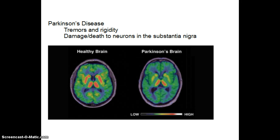That's what we see in this scan. In a healthy brain, the red and yellow lights up in areas of the basal ganglia and the substantia nigra, whereas in Parkinson's disease that activity is greatly reduced.